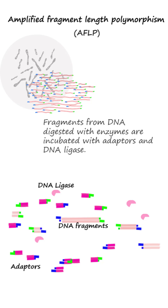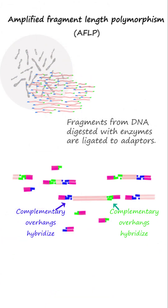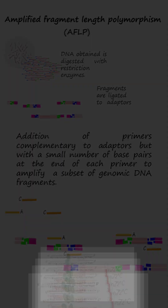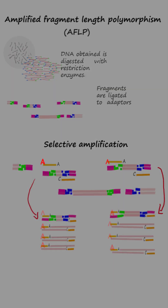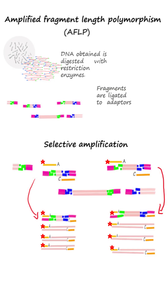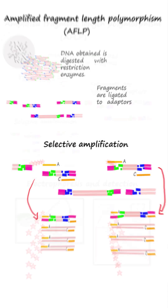Double-stranded nucleotide adapters are joined to the DNA fragments to serve as primer binding sites for PCR amplification. Primers complementary to the adapter and restriction site sequence, with additional nucleotides at the 3' end, are used to selectively amplify a subset of ligated fragments.